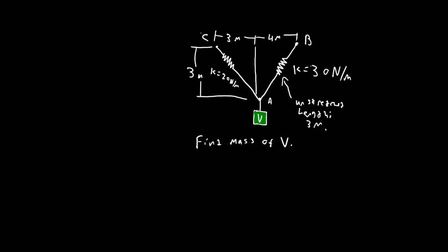So we have these two cables with springs and we have to determine the mass of V. We're given that the unstretched length of this spring AB is 3 meters, and the K for this spring is 30 newtons per meter and the K for this spring is 20 newtons per meter. We're not given the unstretched length of this spring, but we don't really need it. So let's start.